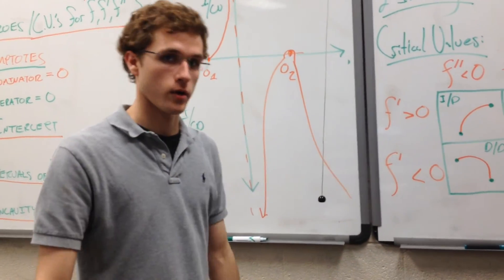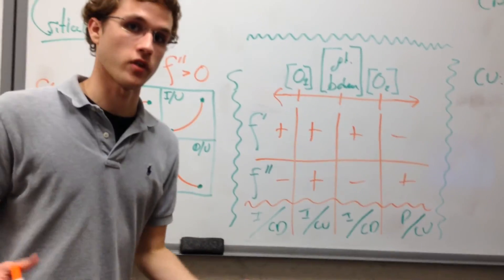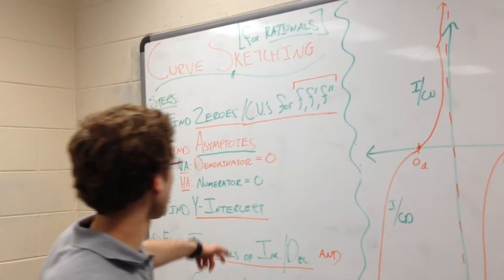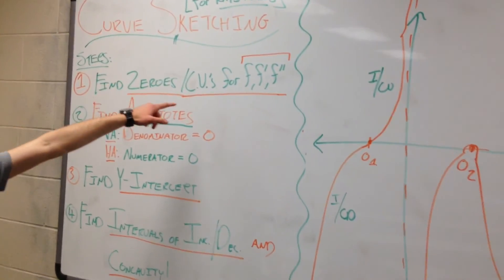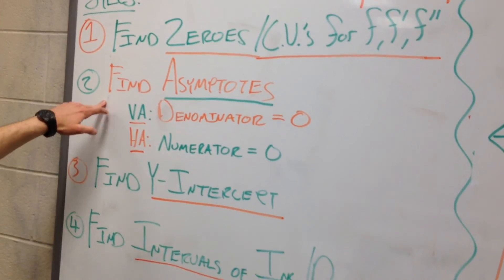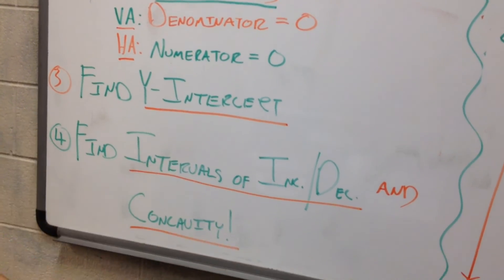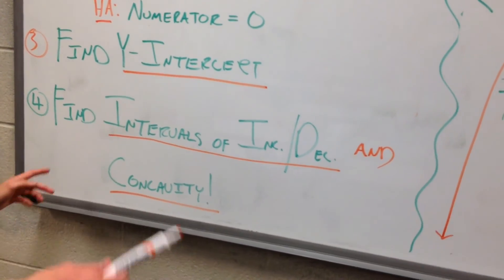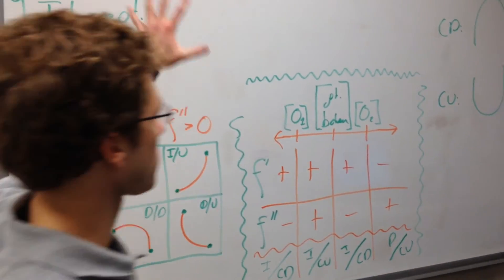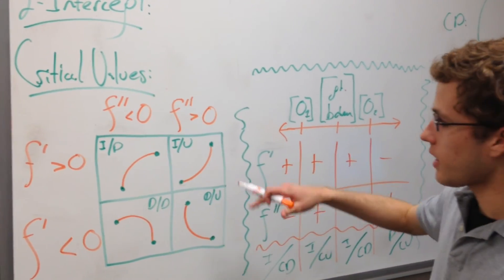Most graphs are going to be a lot more complicated than this. We just used a simple sign chart and a graph with only one asymptote. Here's a summary of your steps: find your zeros of the function; find critical values for f, f prime, and f double prime; find your vertical and horizontal asymptotes; find your y-intercepts; find intervals of increase and decrease; and find concavity.